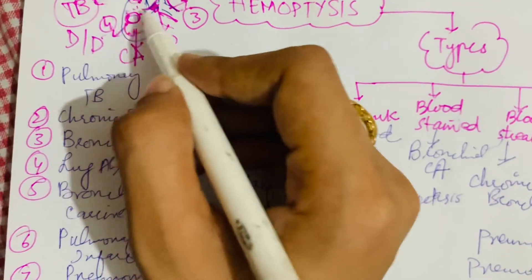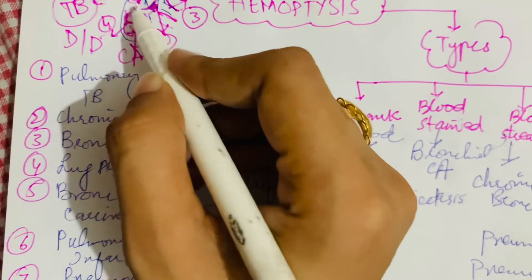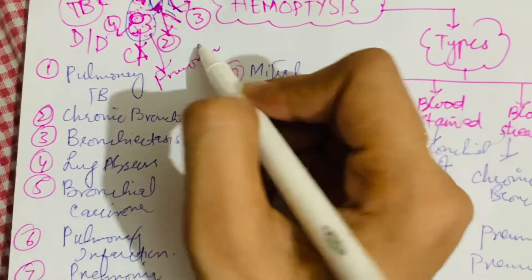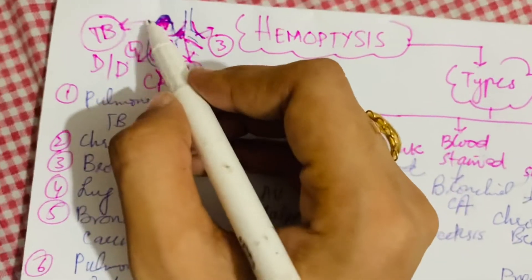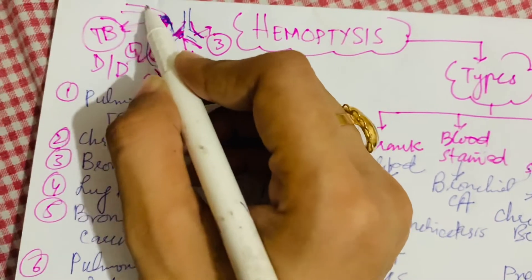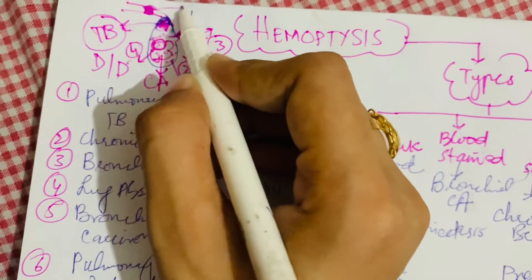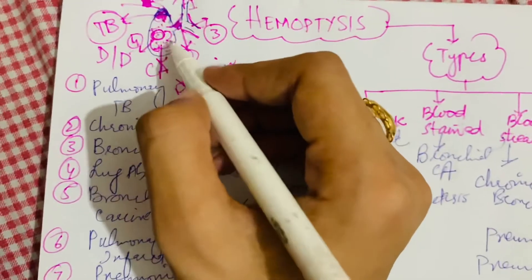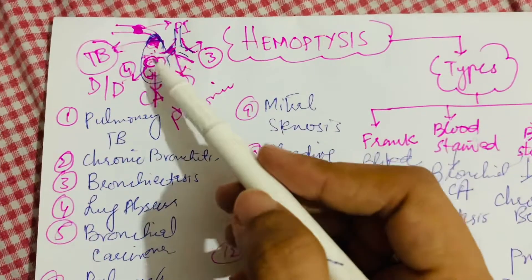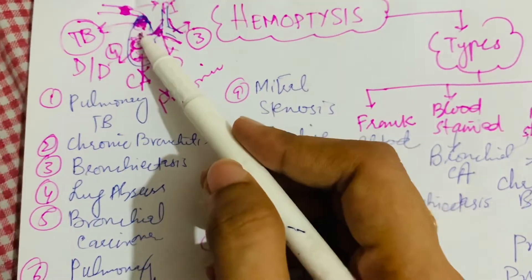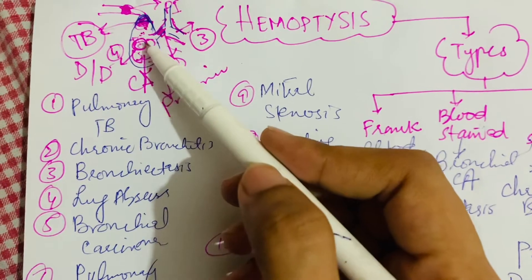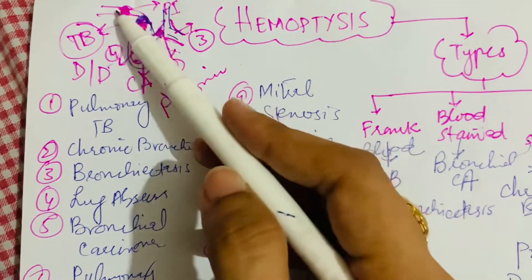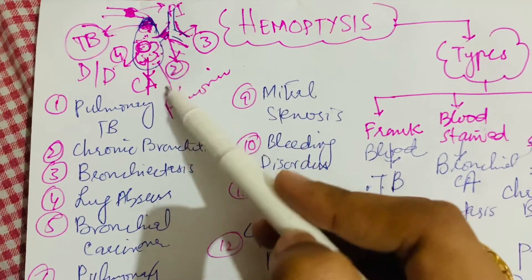Hemoptysis also occurs in pneumonia, pulmonary infarction, and bronchial adenoma. So the common lung-related causes are: TB, bronchiectasis, lung abscess, lung carcinoma, adenoma, pulmonary infarction, and pneumonia.